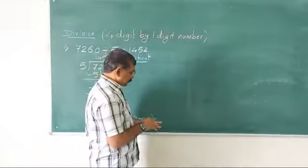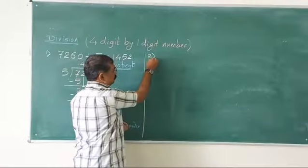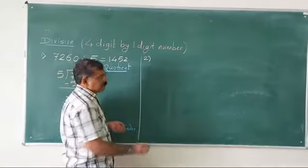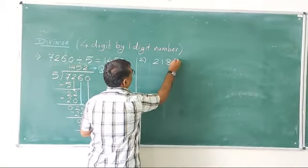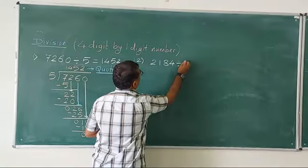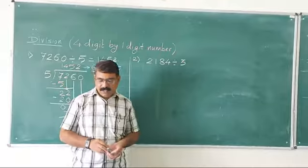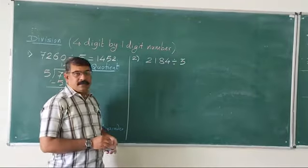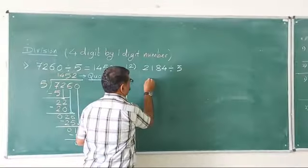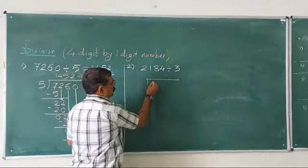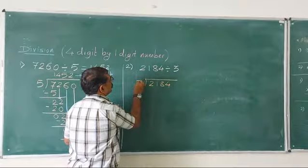Let us see one more example of the same type. I am taking example number 2: 2184 divided by 3. We are going to write it like this — 2184 divided by 3.